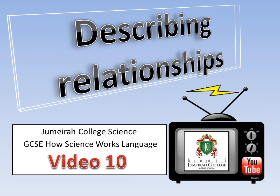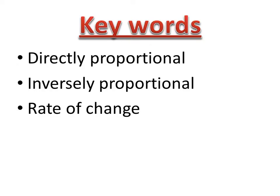Describing relationships between data sets is really tricky and there are a few really important keywords that you need to know. Relationships can be directly proportional, they can also be inversely proportional, and we can look at the rate of change. There are lots of other relationships as well, but these are the main ones we're going to talk about.